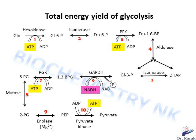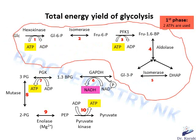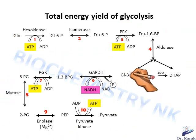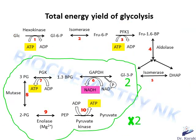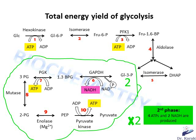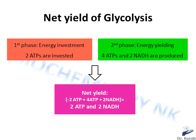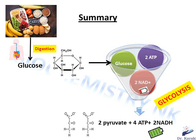Now let's look at the total energy yield of glycolysis. In the first phase, in reactions 1 and 3, we use 2 moles of ATP. In the second phase, in reactions 7 and 10, we produce 2 moles of ATP, and in reaction 6 we produce 1 mole of NADH. Since phase 2 starts with 2 molecules of glyceraldehyde 3-phosphate, we multiply by 2, giving 4 moles of ATP and 2 moles of NADH from the second phase. So the net yield of glycolysis is: minus 2 ATP consumed in phase 1, plus 4 ATP produced in phase 2, plus 2 NADH — equaling a net of 2 ATP and 2 NADH. After eating a carb-containing meal, glucose enters cells via glucose transporters and is broken down into 2 molecules of pyruvate, 2 ATP, and 2 NADH.